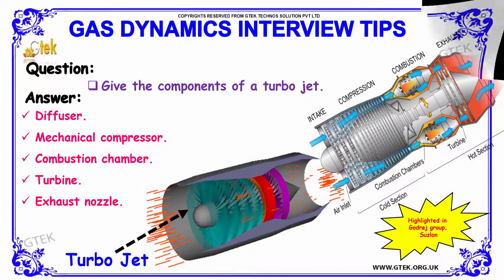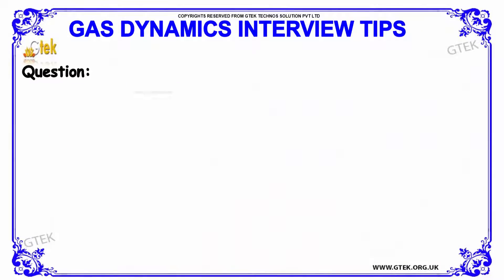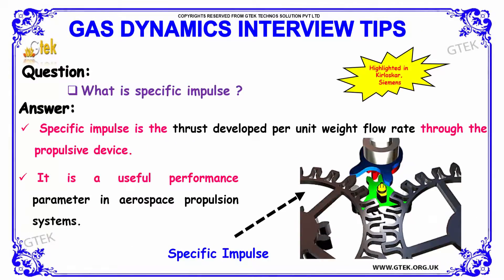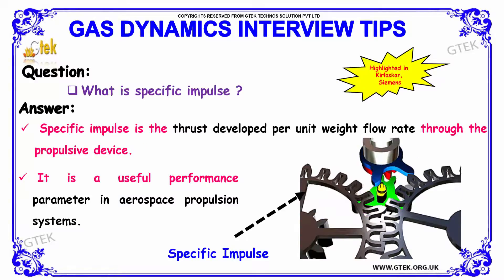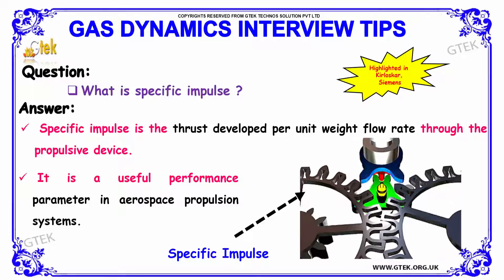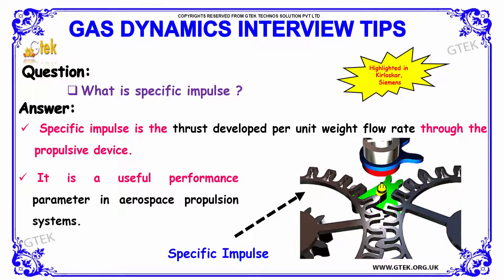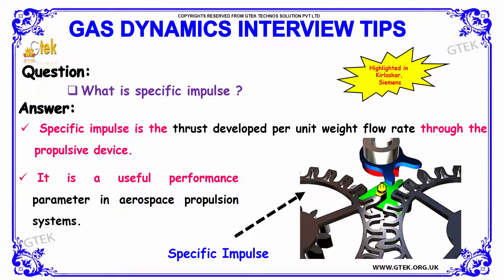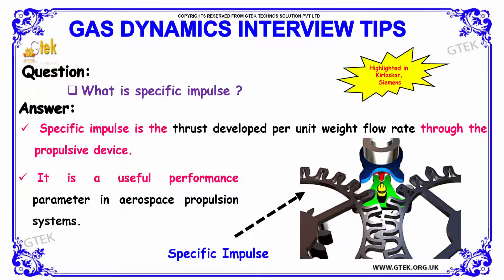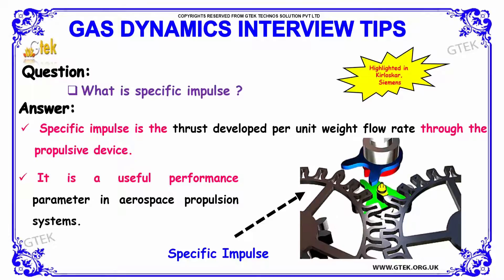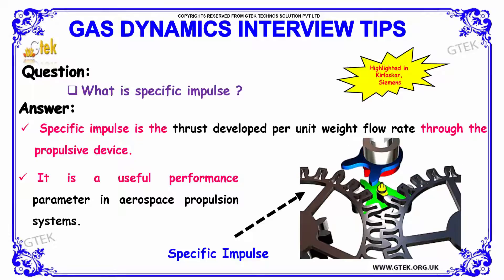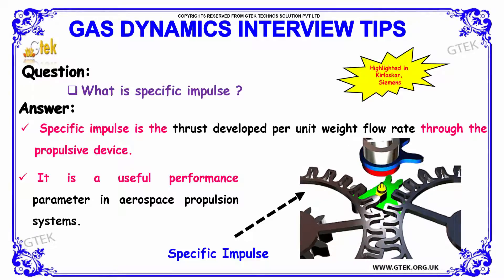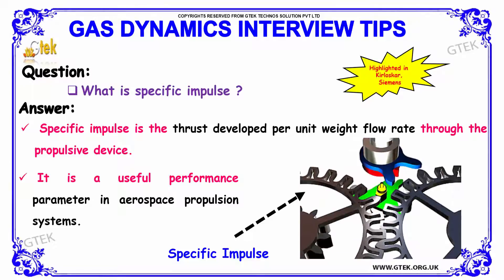You can see the turbojet depiction here. Next question: what is meant by specific impulse? Specific impulse is the thrust developed per unit weight flow rate through the propulsive device. It is a useful performance parameter in aerospace propulsion systems.